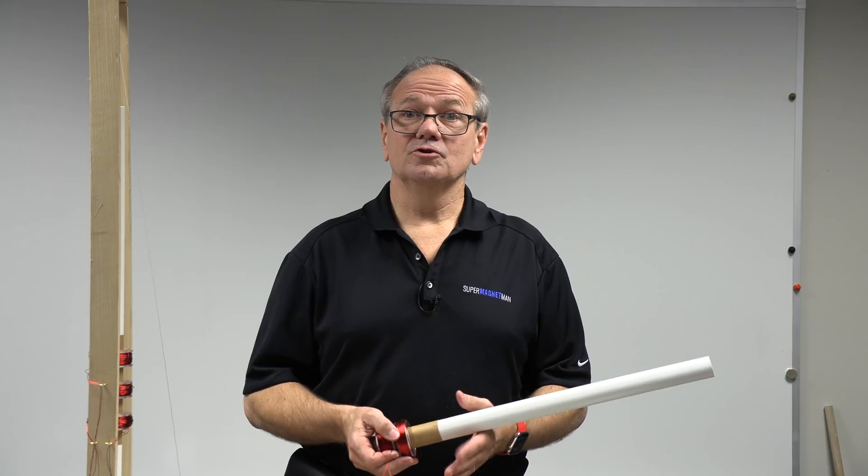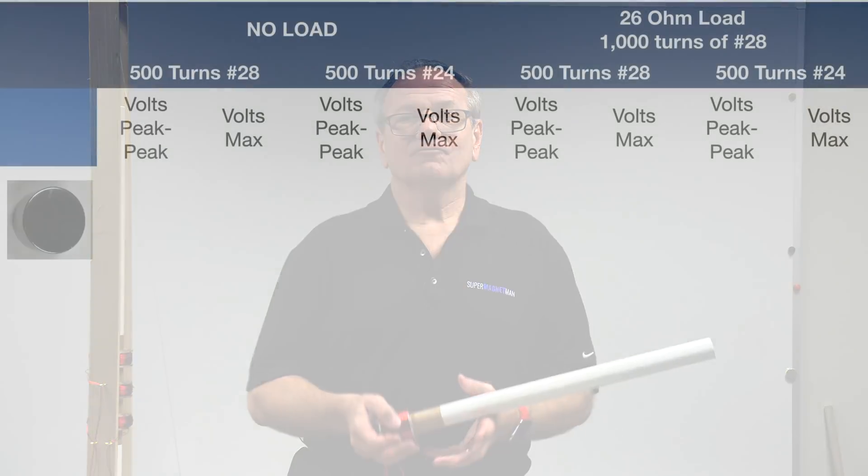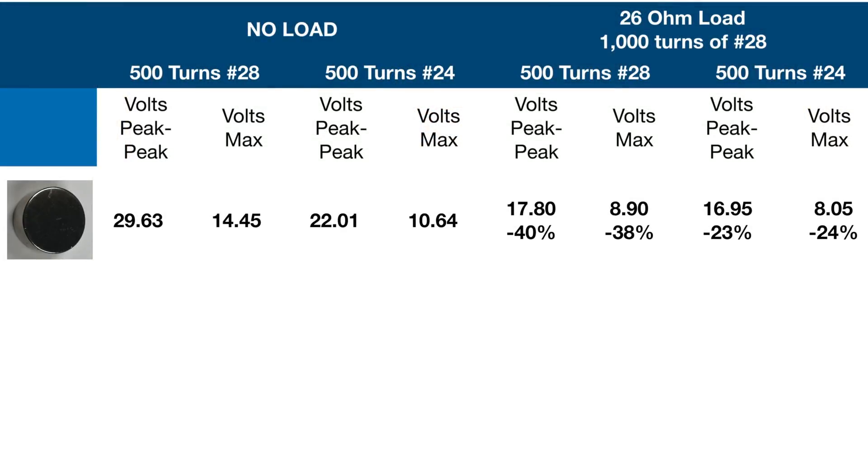Now we want to review all that data. Our first one we're looking at is the one inch diameter, half inch thick magnet. We noticed that with the 28 gauge wire, we had 29.63 volts peak to peak with no load. When we added a load, it dropped to 17.8. Then we tried that with the 24 gauge wire, and we went to 22.01 with the 24 gauge wire, and it had no load. When we put a load on it, it dropped to 16.95.